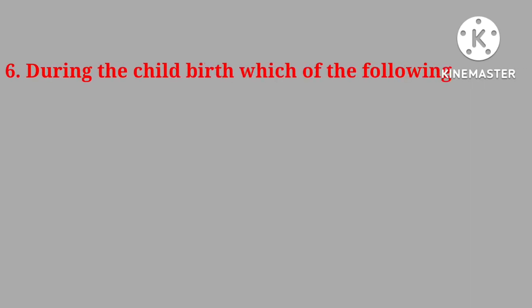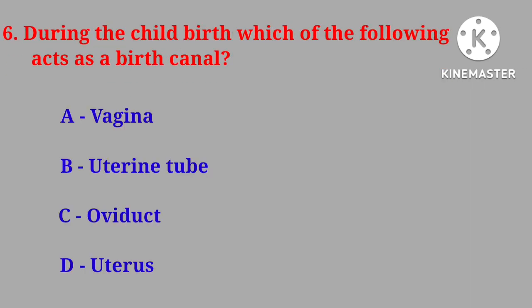Question No. 6: During childbirth, which of the following acts as a birth canal? Vagina, uterine tube, oviduct, or uterus. Correct answer is vagina.